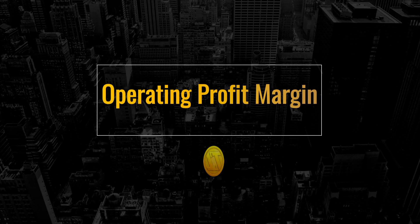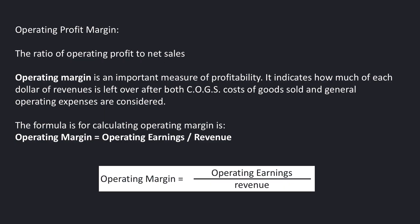Hey everybody, this is Coach D with TackleTrading.com here to talk about operating profit margin. Operating profit margin is the ratio of operating profit to net sales. It is an important measure of profitability — it indicates how much of each dollar of revenue is left over after both costs of goods sold and general operating expenses are considered. The formula is simple: operating margin equals operating earnings divided by revenue.